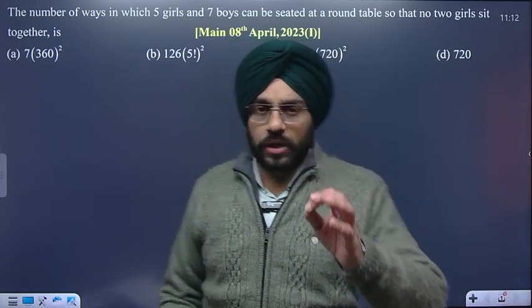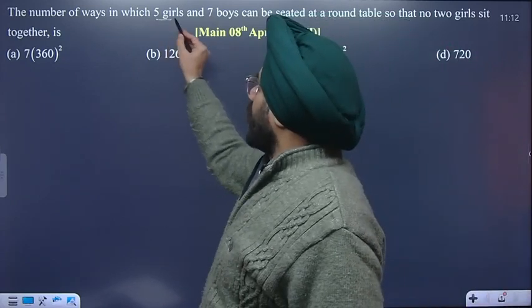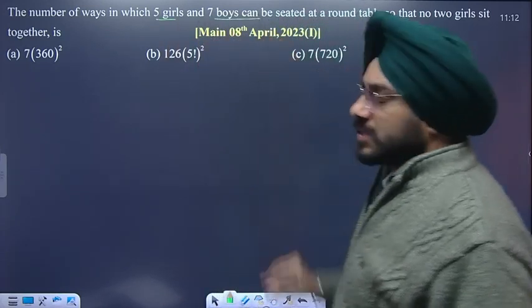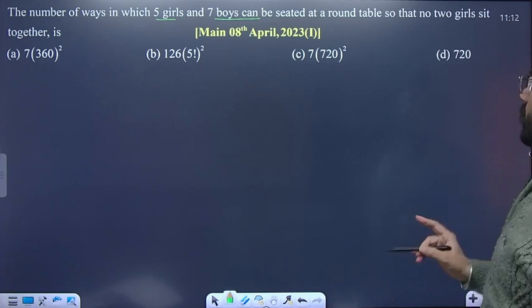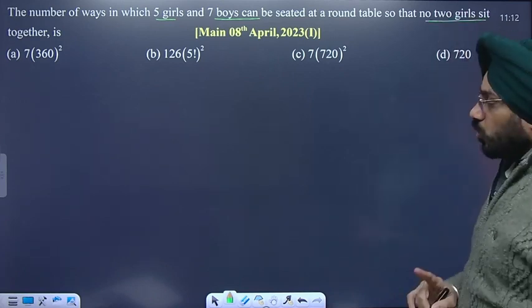Student, today we will discuss the round table question. The number of ways in which five girls and seven boys can be seated at a round table so that no two girls sit together.